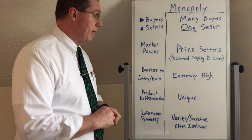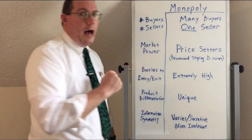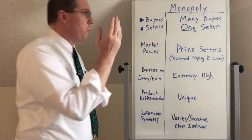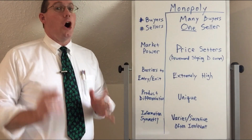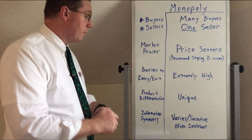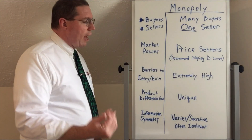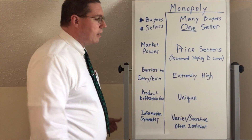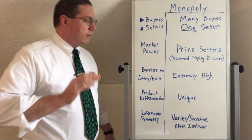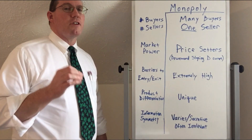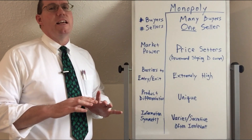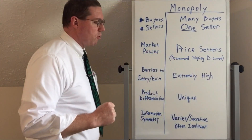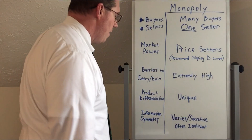Barriers to entry and exit are extremely high. Not only is it difficult for any other company to enter the industry, it is virtually impossible for this one seller to get out. They are the only ones selling, and they are in. Product differentiation: the product is unique. Even though it may have some relative substitutes, it doesn't have any close substitutes. That's why there are no competitors — the product is so heterogeneous that it is unique.